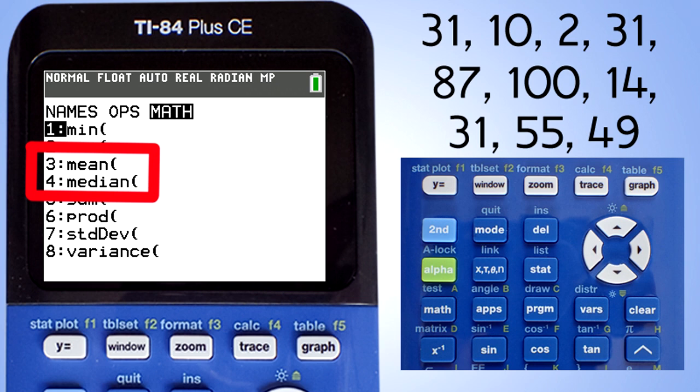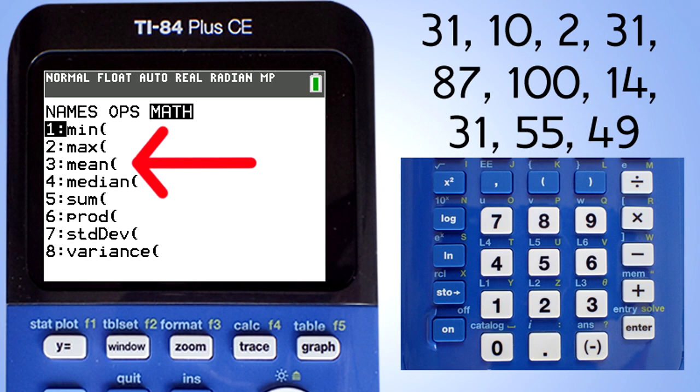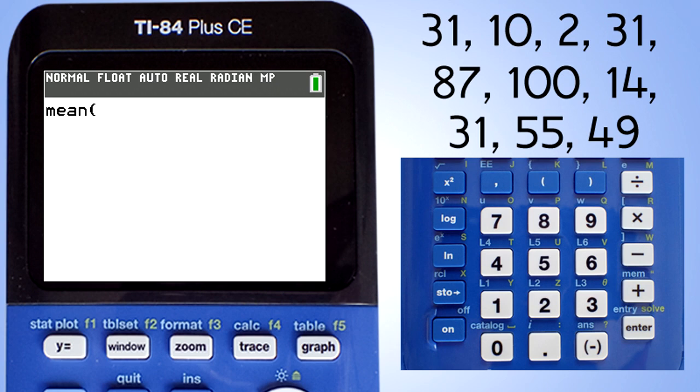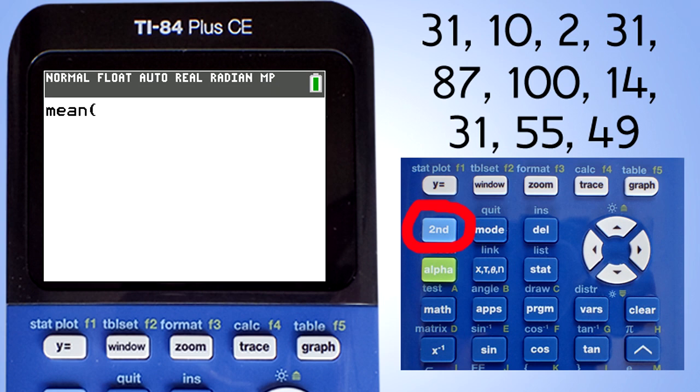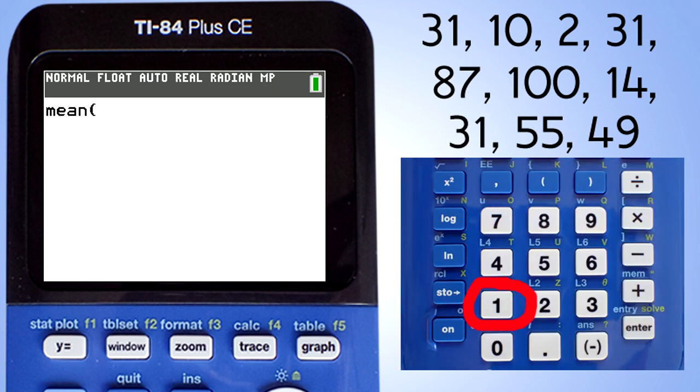Just enter the list L1. We'll find the mean. Press the 3 key. This window appears. Enter L1 by pressing the second button and the 1 key. Now close the parentheses by pressing this key here. Press the enter button to calculate the mean from list L1. And there's the mean, 41.